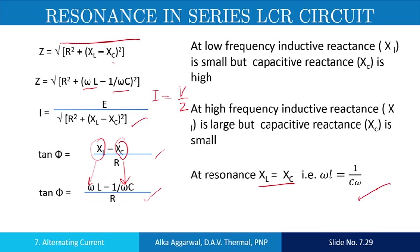When we put XL equals to XC, we see that the impedance reduces to R. So at resonance, the impedance is equal to the resistance.